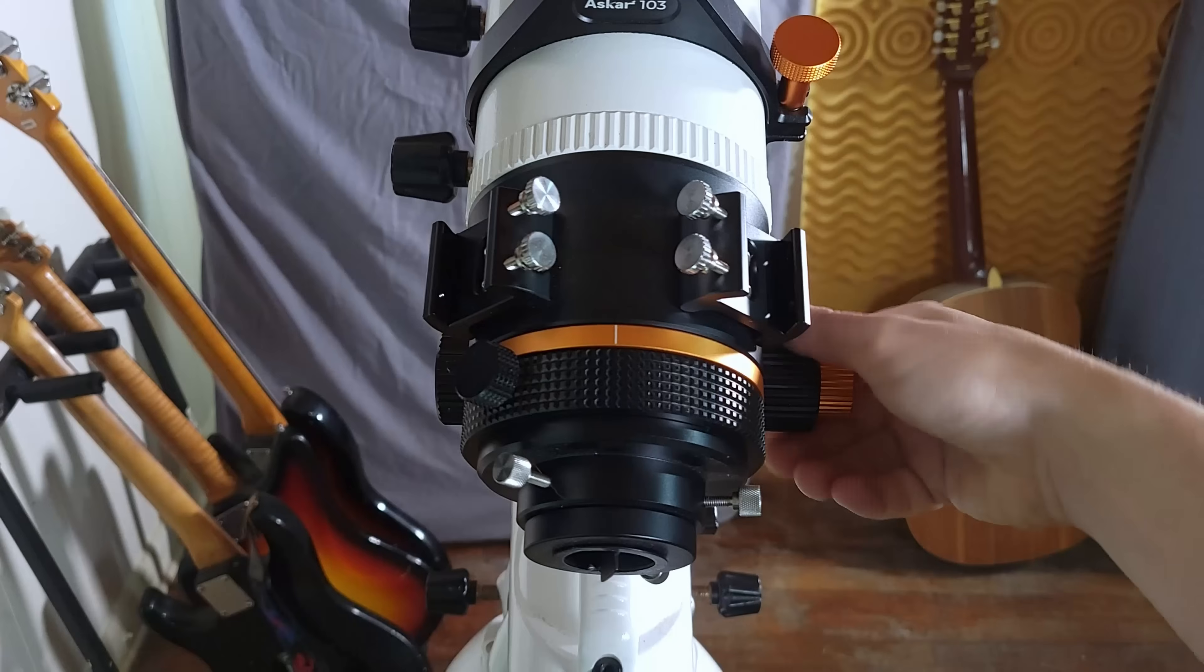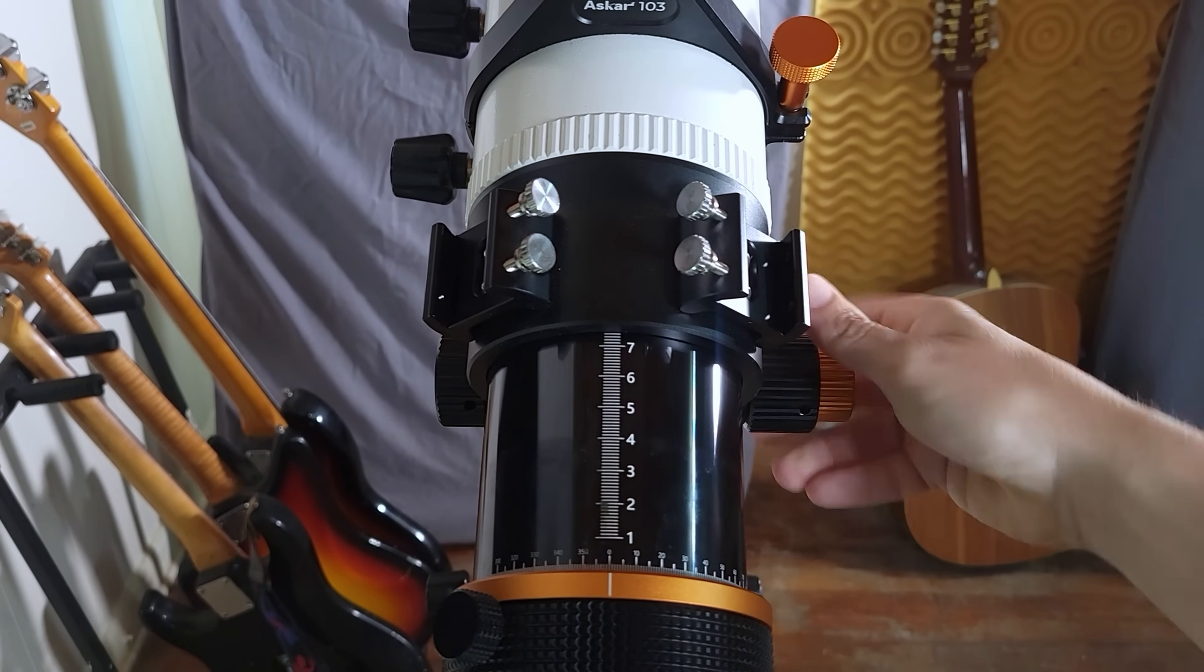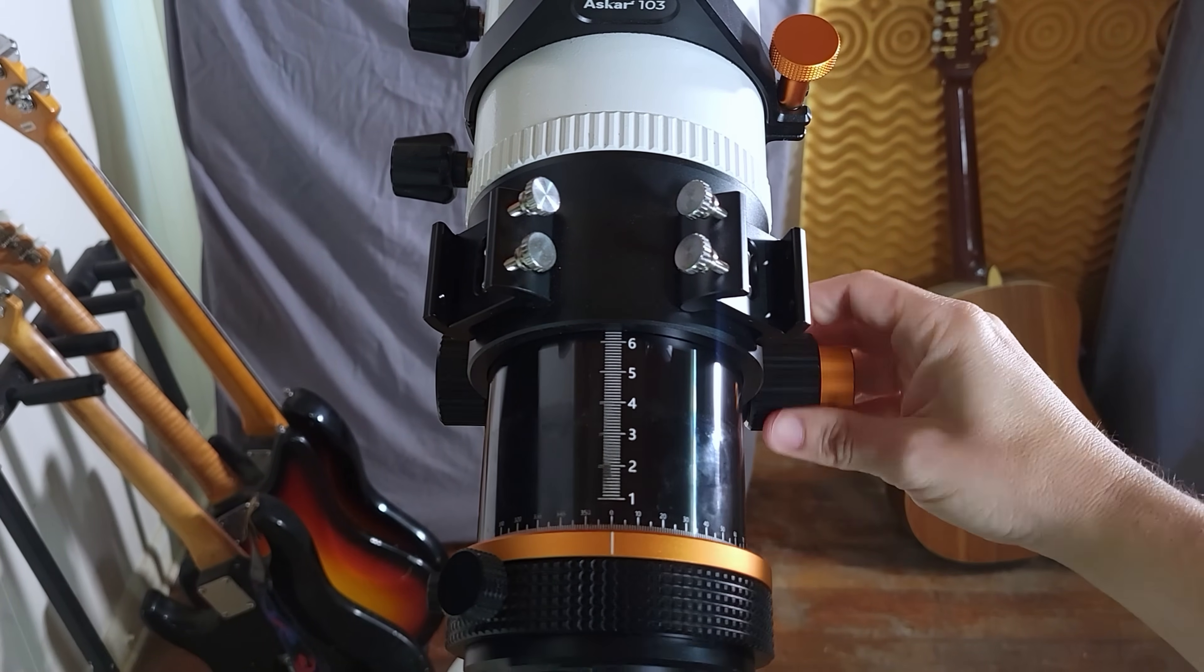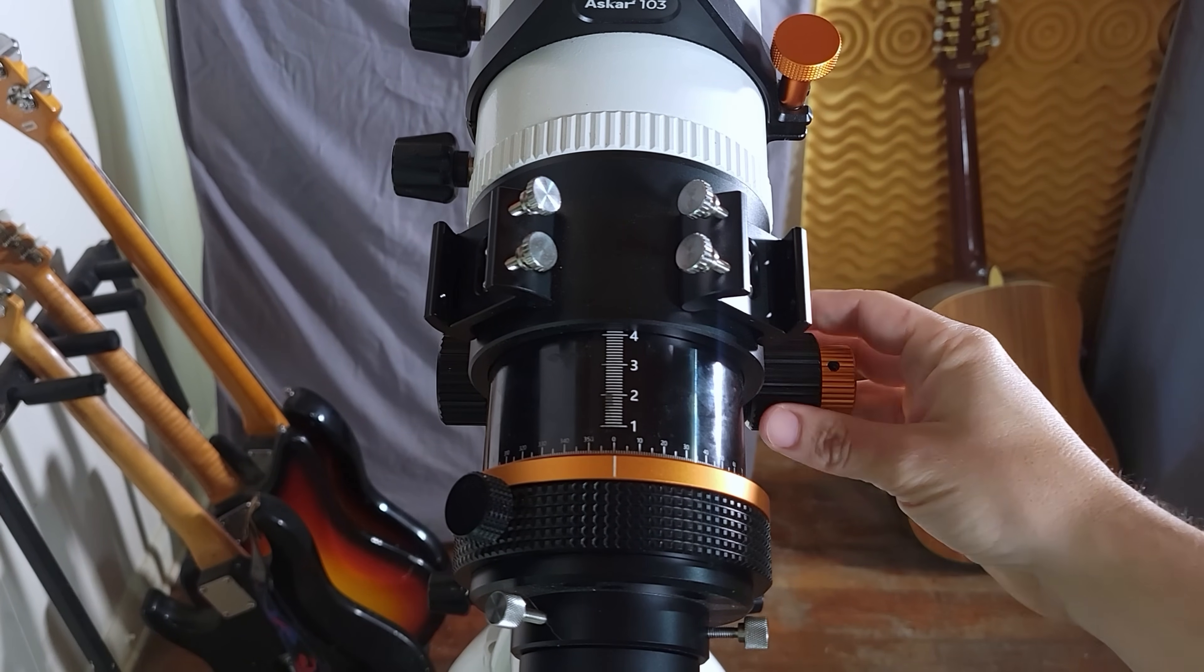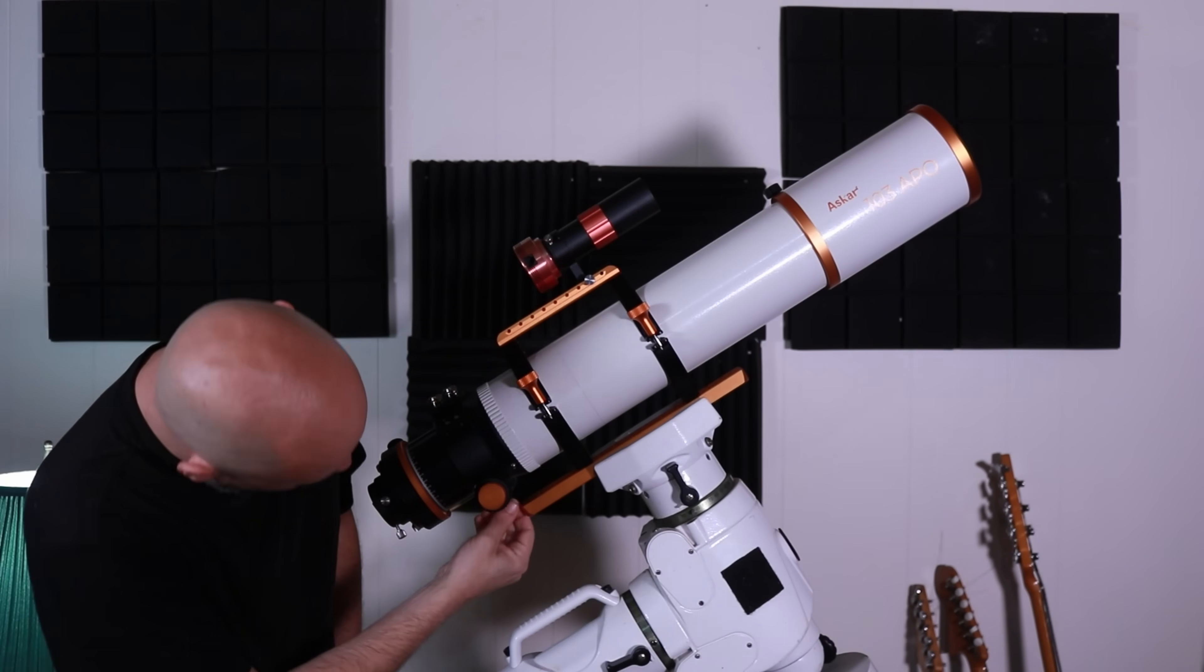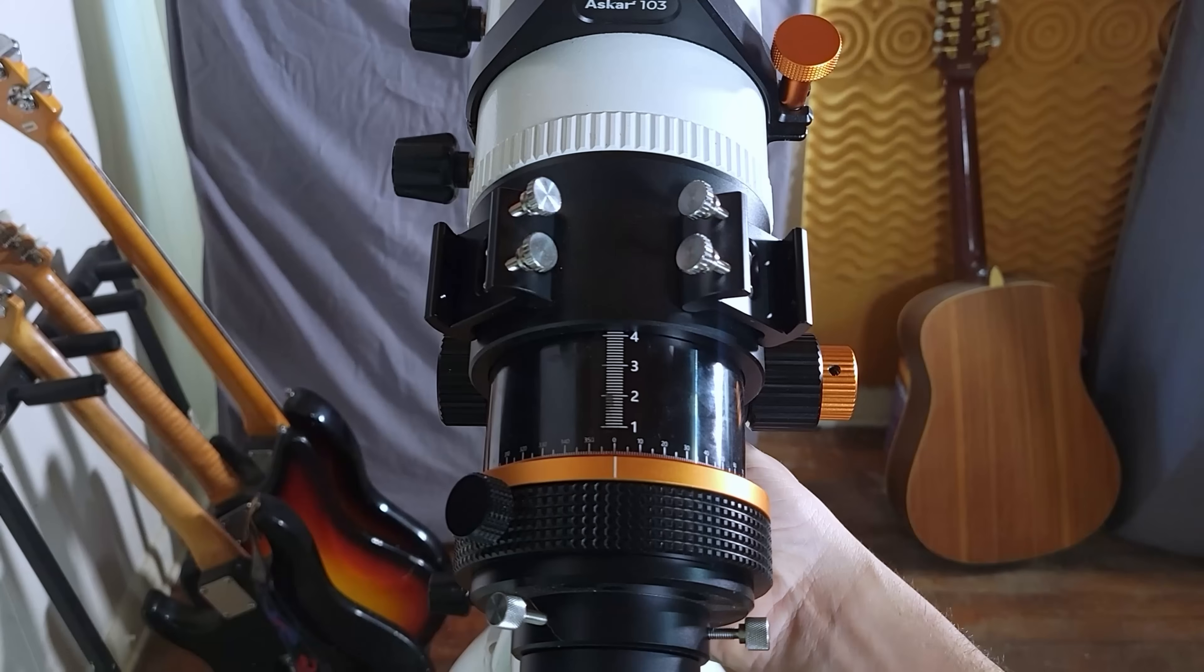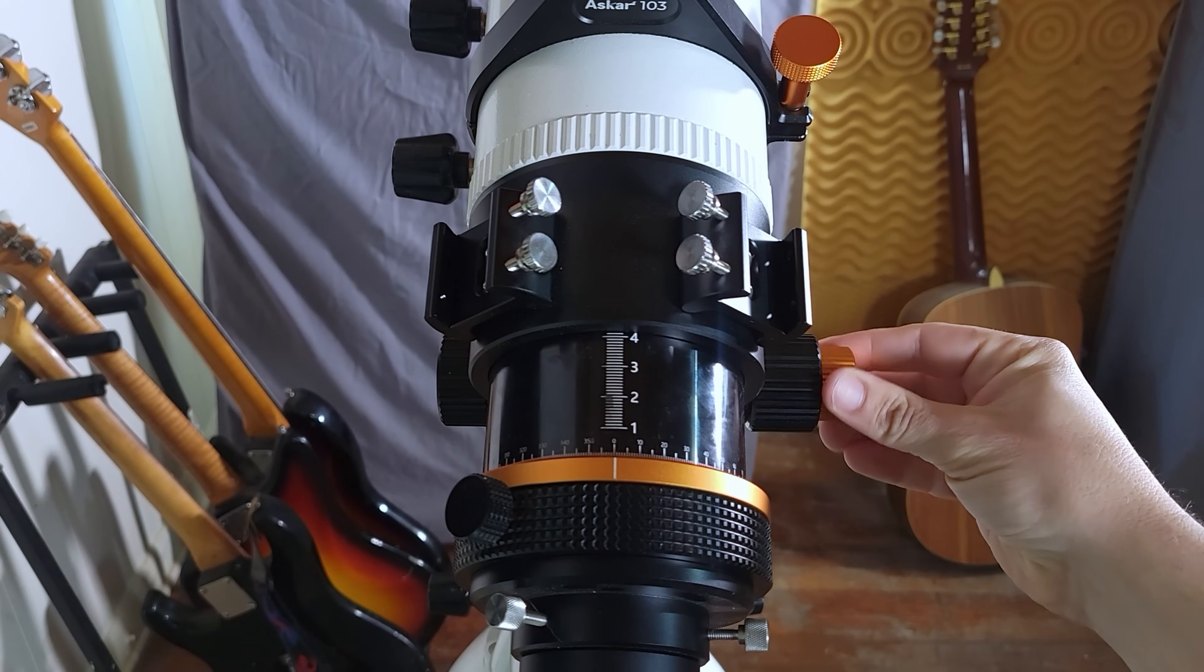It's got a dual-speed rack and pinion focuser with a nice little orange-golden fine focus knob and 10 centimeters of focus play. The focus feels fairly smooth. Typically, about 4 centimeters is where focus is on all my cameras. Once you get focused to where you like, you've got a locking mechanism down here, so you can go ahead and lock your focus in. Once your focus is locked, you can do fine adjustments with our fine focus knob right here.